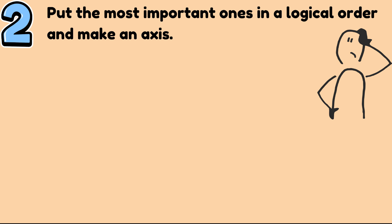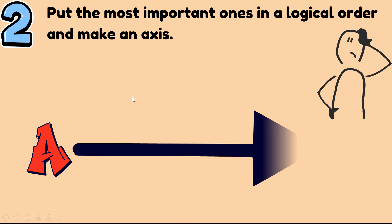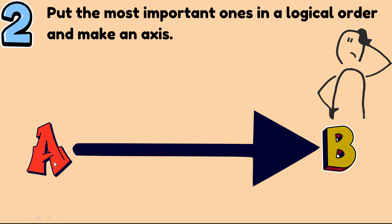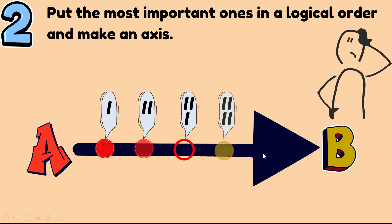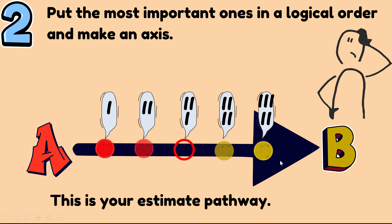Number two: put the most important keywords you have found in a logical order and make an axis. This axis could look like this — it starts from A and goes to B. In between, you can put the headings you have made out of those keywords, or you may directly use those keywords in order. This is your estimated pathway.